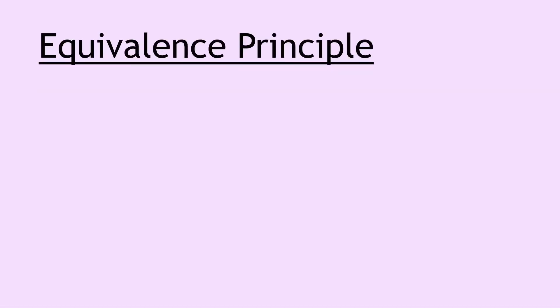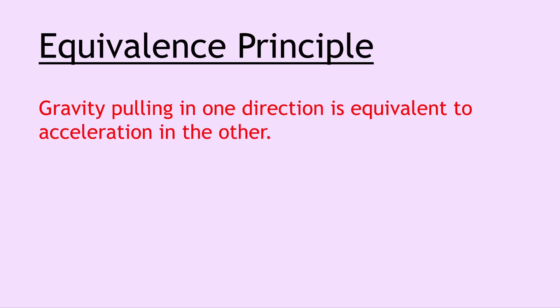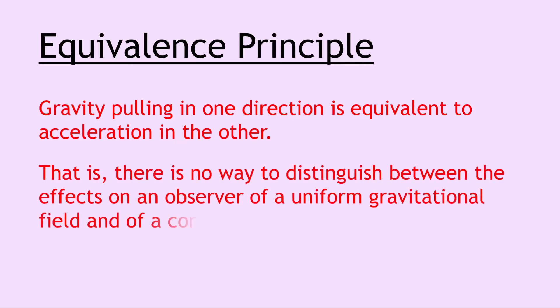Moving on we have the equivalence principle which is a really important part of general relativity and this says that gravity pulling in one direction is equivalent to acceleration in the other. Or in other words there is no way to distinguish between the effects on an observer of a uniform gravitational field and of a constant acceleration.